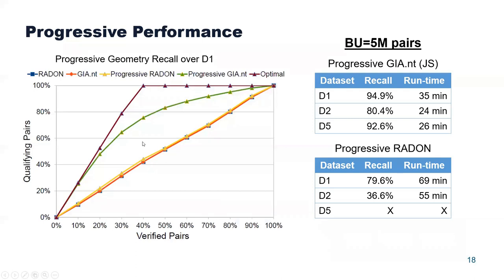Regarding the progressive performance, we estimated the progressive geometry recall for the smallest dataset, considering the optimal approach and all others. We observe that Progressive GIANT is very close to the optimal approach, whereas batch GIANT, Radon, and Progressive Radon fall into the lower portion of the diagram, corresponding more or less to a random approach. With a specified budget of five million verifications, Progressive GIANT manages to exhibit very high recall and very low running time, whereas Progressive Radon has moderate or low recall and much larger run time. This confirms that the geometry-centric approach of Progressive GIANT is better than the tile-centric approach of Progressive Radon.